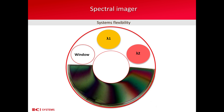They can be bandpass filters or any other type of filters, and even in combination with a window, which is actually a hole drilled in the wheel. And this is used for measuring the same target, the same object in an integrated wavelength range.